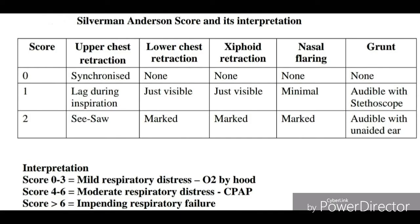For xiphoid retraction: if no retraction, score is 0; if just visible, score is 1; if marked, score is 2. For nasal flaring: if not present, score is 0; if minimal, score is 1; if marked, score is 2. For grunting sound: if not audible, score is 0; if audible with stethoscope, score is 1; if audible with the unaided ear even from a distance, score is 2.